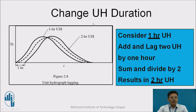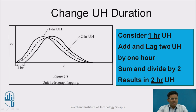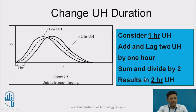To change the unit hydrograph duration: consider a 1-hour unit hydrograph and add a lag of 1 hour to a second unit hydrograph, sum the ordinates and divide by 2, resulting in a 2-hour unit hydrograph. That is, we add the ordinates of the two 1-hour unit hydrographs — the second lagged by 1 hour — and divide by 2.